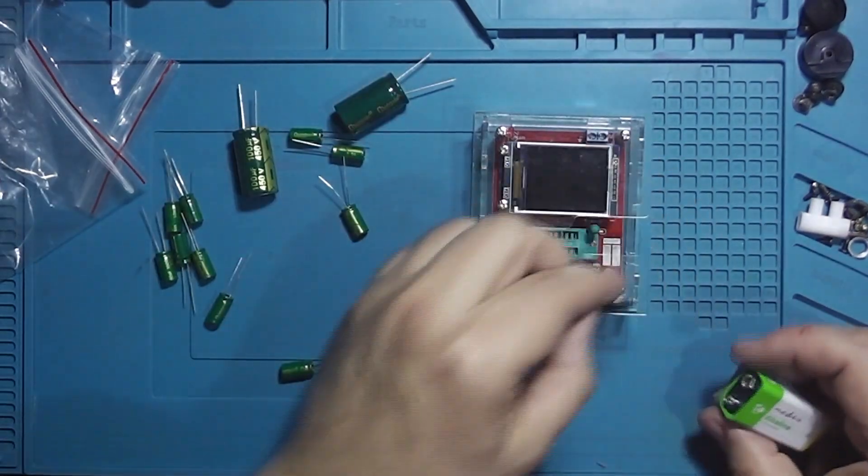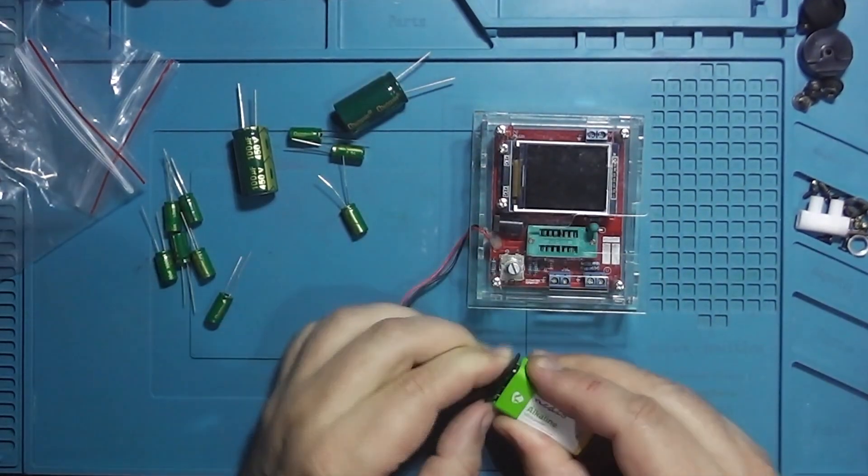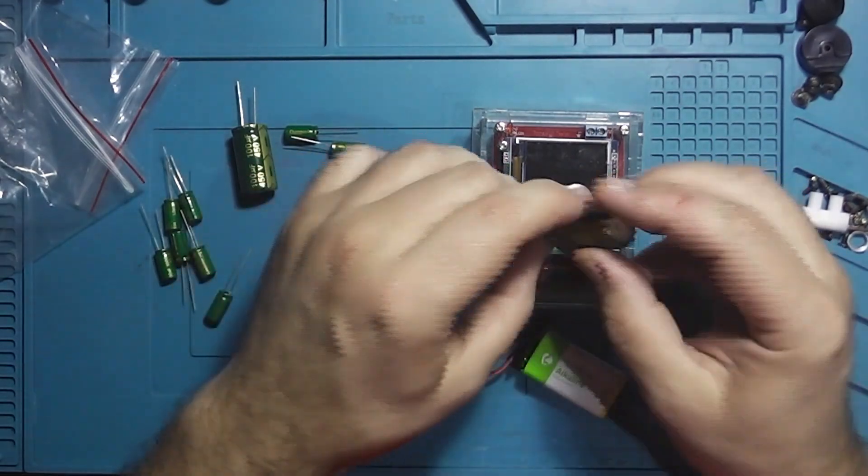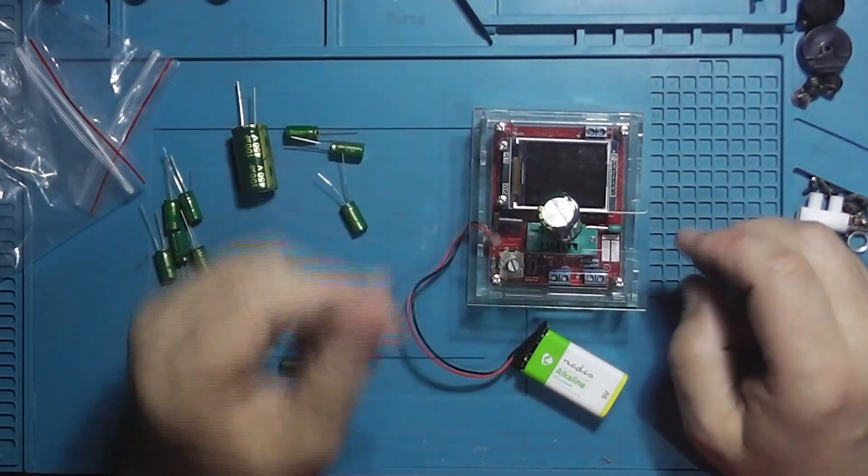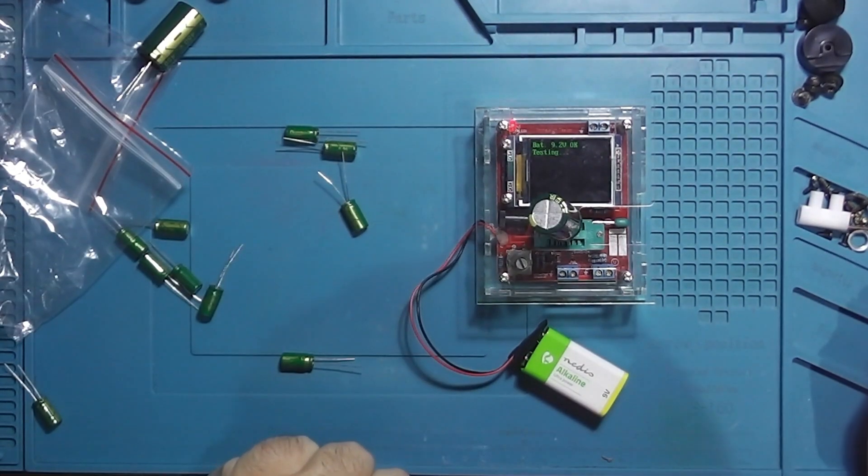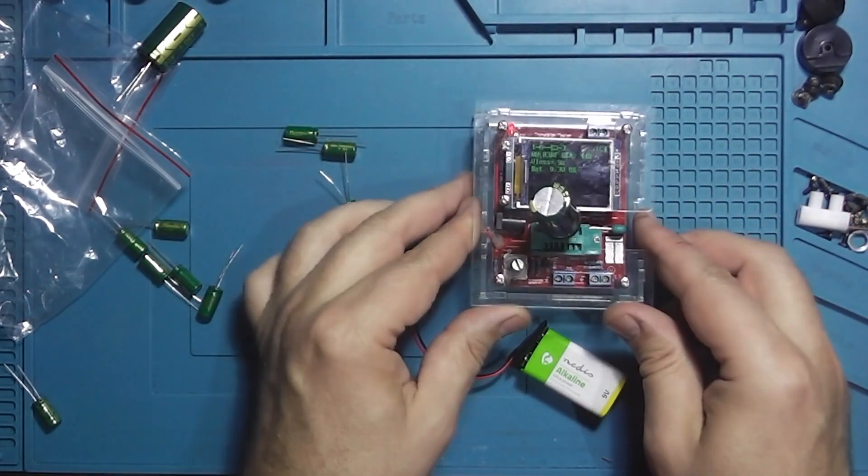Now let's use the well-known Universal Component tester, a tool every electronics enthusiast or service technician should have. The 100 microfarad capacitor shows low ESR as you can see, and the capacitance is pretty accurate, and the same goes for the second one. Low ESR and capacitance within the tolerance range.